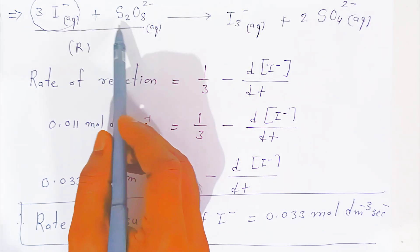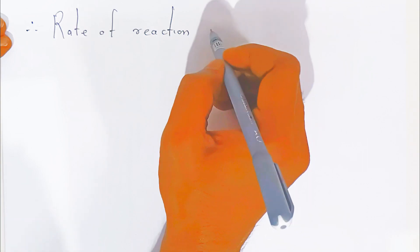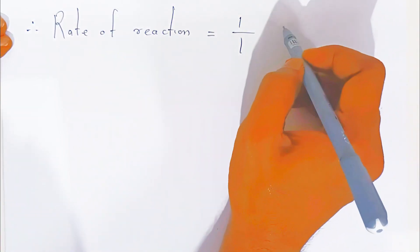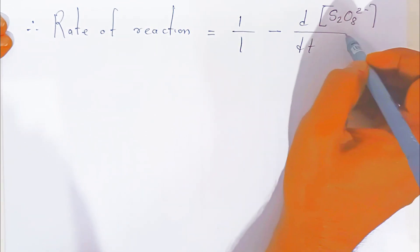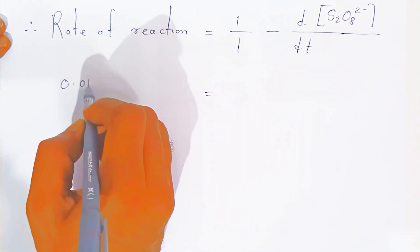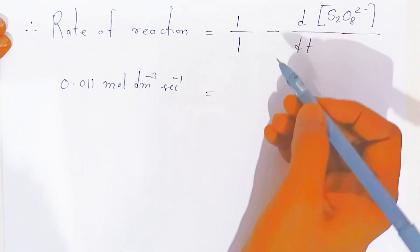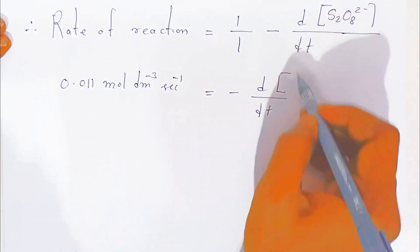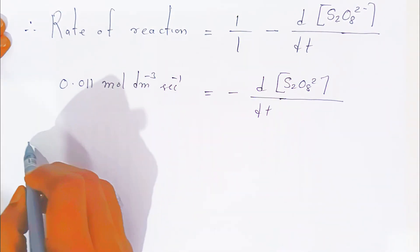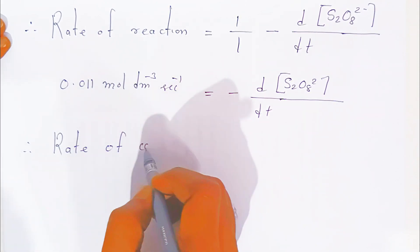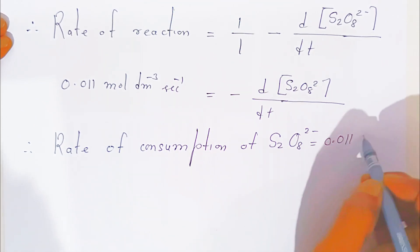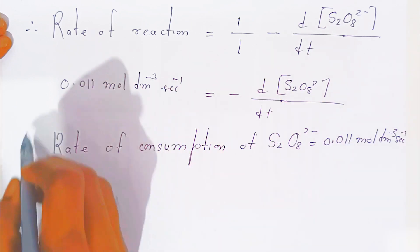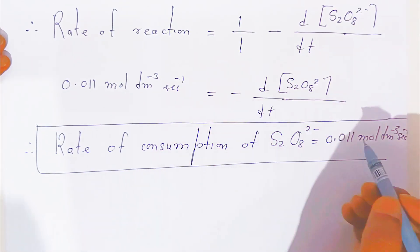Now we find the rate of consumption of persulfate ion (S₂O₈²⁻). When you apply the rate of reaction to persulfate, the coefficient is 1, so (1/1) = 1. Since it is on the reactant side, rate of reaction = −d[S₂O₈²⁻]/dt = 0.011 mol per dm³ per second. Therefore rate of consumption of persulfate = 0.011 mol per dm³ per second.